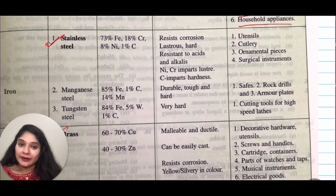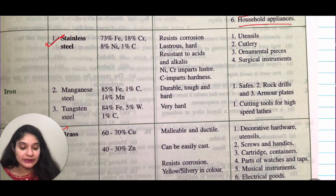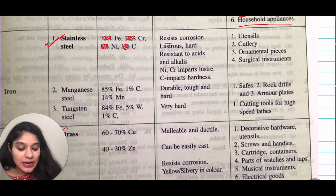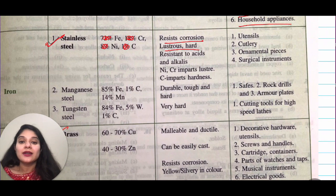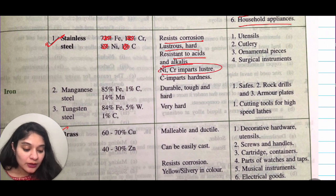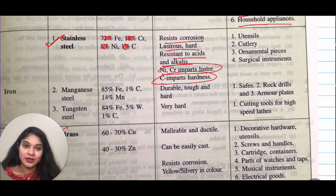For iron, you need to remember stainless steel: it is made up of iron, chromium, nickel, and carbon. It resists corrosion, is shiny, resistant to acids and alkalis. Nickel and chromium impart luster; carbon imparts hardness. Stainless steel is widely used and you would have seen it in many applications.